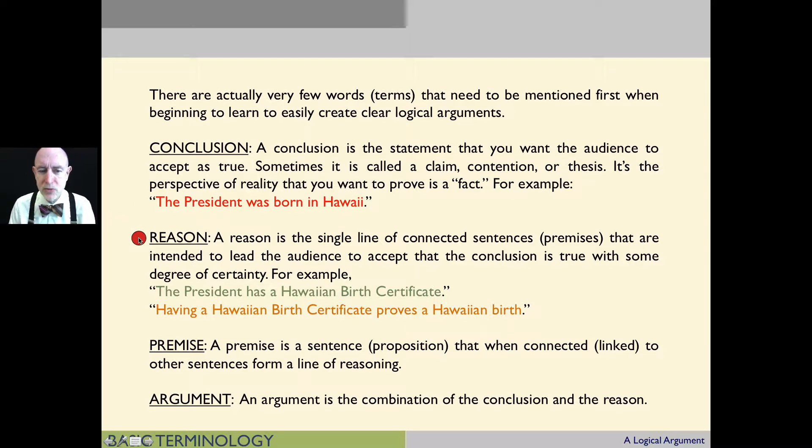The next term is reason. And a reason is the single line of connected sentences, sometimes called premises, that are intended to lead the audience to accept that the conclusion is true with some degree of certainty. For example, and here we have two sentences. The first one is, the president has a Hawaiian birth certificate. And the second sentence that comprises the reason is, having a Hawaiian birth certificate proves a Hawaiian birth. So we've talked about conclusion, reason.